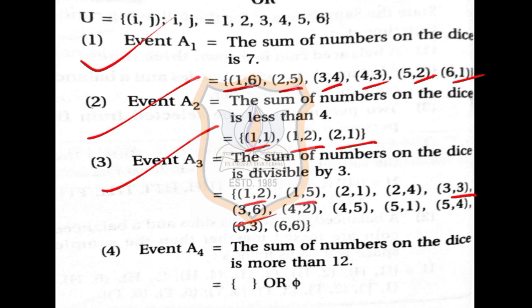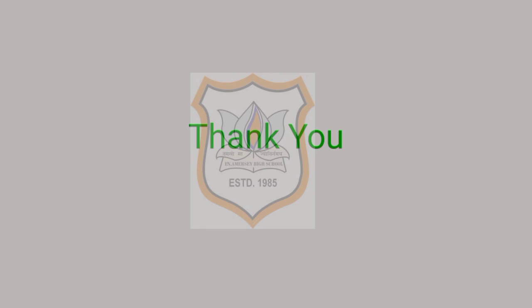Event A4 — sum more than 12: The maximum possible sum is 6+6=12, so no outcome can exceed 12. Therefore Event A4 is an empty set or null set. I hope you understood these sums on sample spaces. We will continue the same exercise in the next session. Go through these sums and do them. Thank you.